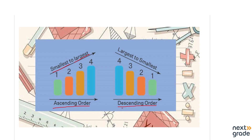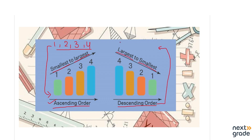Likewise, we have descending order. Descending order means that you have to arrange the numbers from largest to smallest. For example, if I have the numbers 1, 2, 3, and 4 arranged as they are, that is ascending order. If we arrange the same numbers in descending order, we mention the biggest number first, then the smaller ones, down to the smallest.